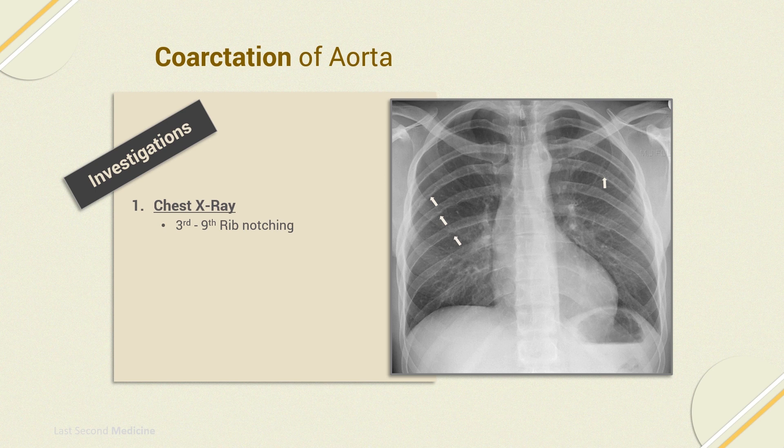This notching may be seen at the inferior border of the posterolateral part of the third to ninth ribs. Chest X-ray may also show the figure of three sign, due to stenosis and pre- and post-stenotic dilatation in the area of the aortic knuckle and descending part.